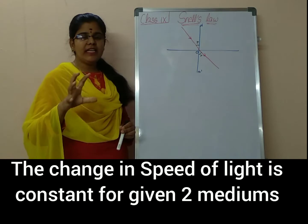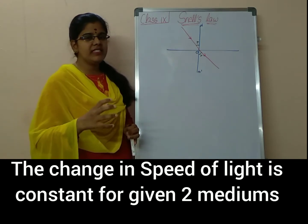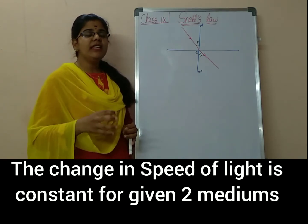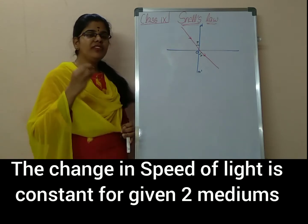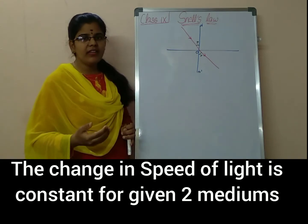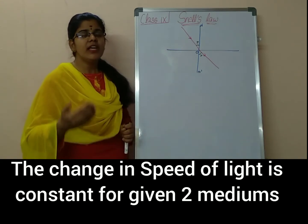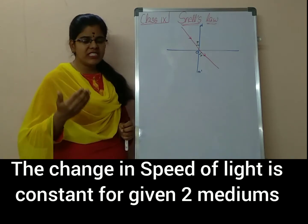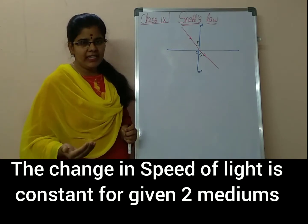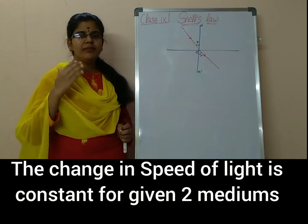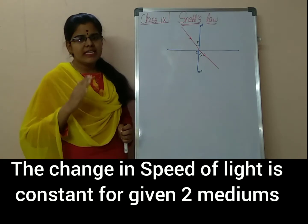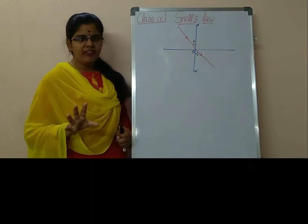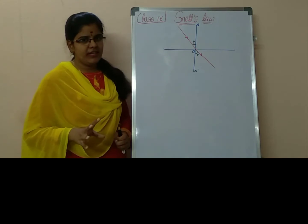So if you are taking any certain two mediums, let us take air and water medium, then the sine of the angle of incidence and the sine of the angle of refraction will be constant. That means the speed of the change in light for the given two mediums will be constant — it might be anywhere, it will be constant.